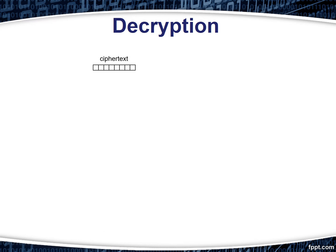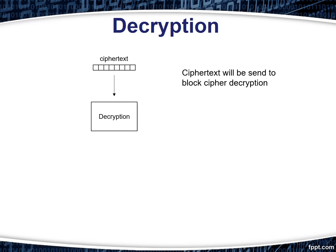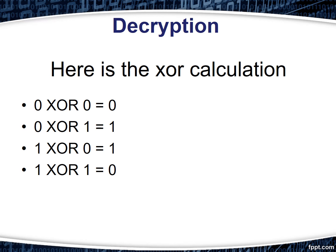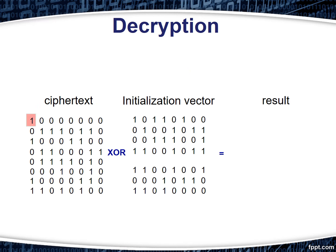For decryption, the cipher text will be sent to the block cipher decryption and a result will be produced. The result will be used to produce an initialization vector and plain text using the XOR method. The XOR operation will compare and produce plain text bit by bit.